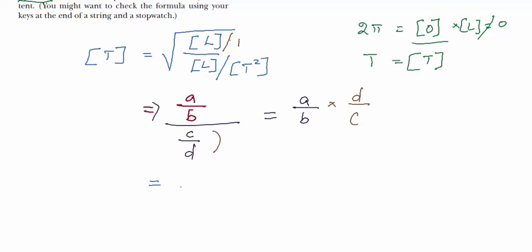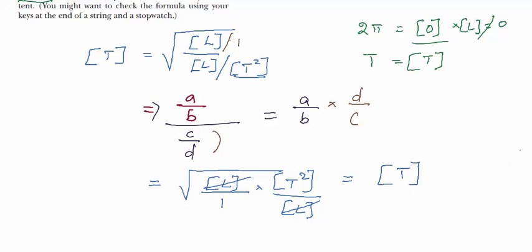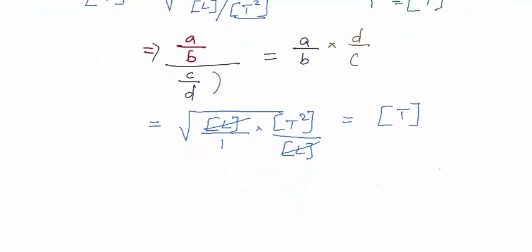Moving on, you have root of L divided by one times T squared. You have to flip this one to the numerator, so you have T squared divided by L. The L cancels out and you have T squared under a square root. T squared of a square root is nothing but the value itself, so therefore T is the dimension. The dimensions are consistent, so consistency is maintained.